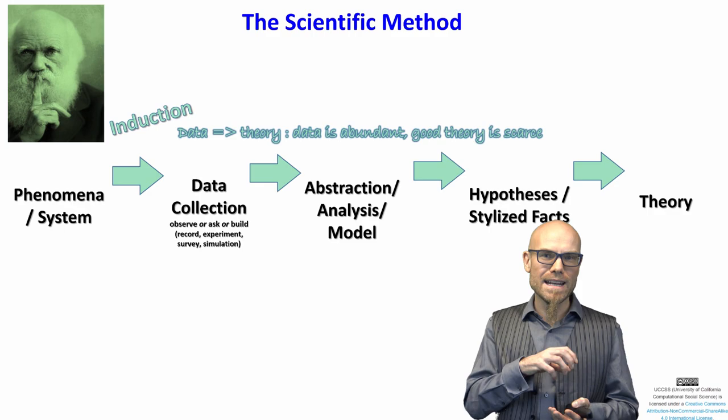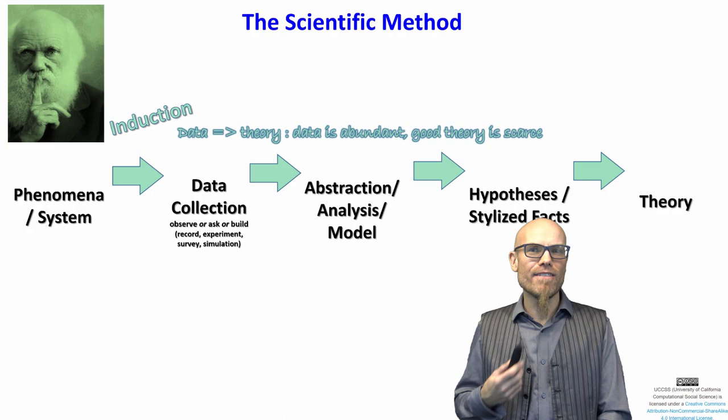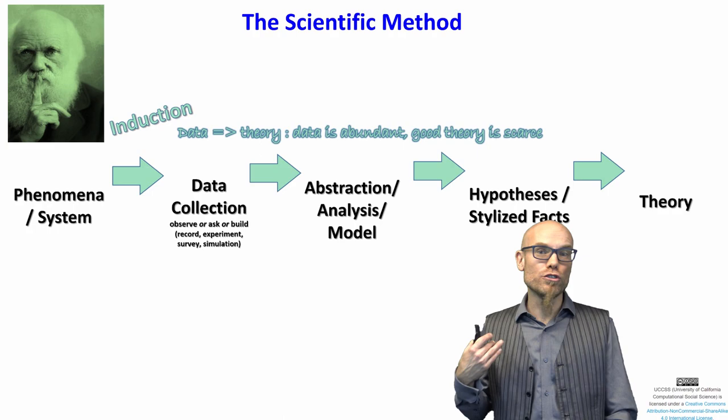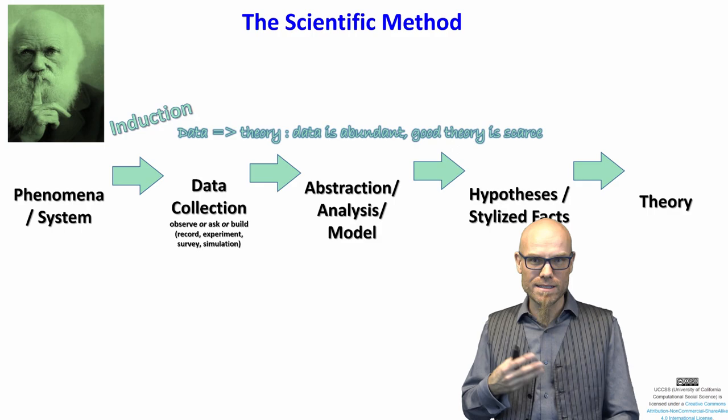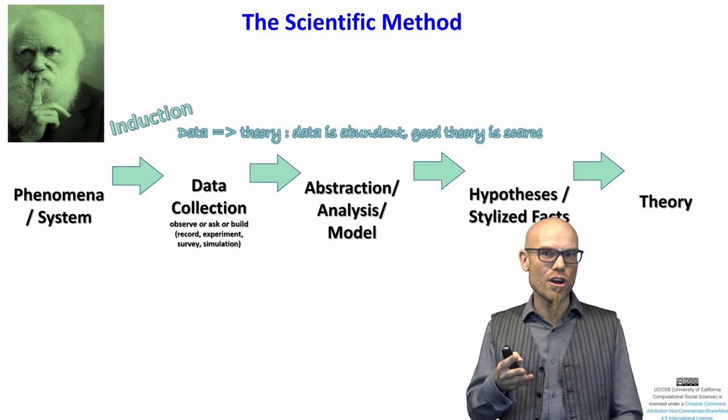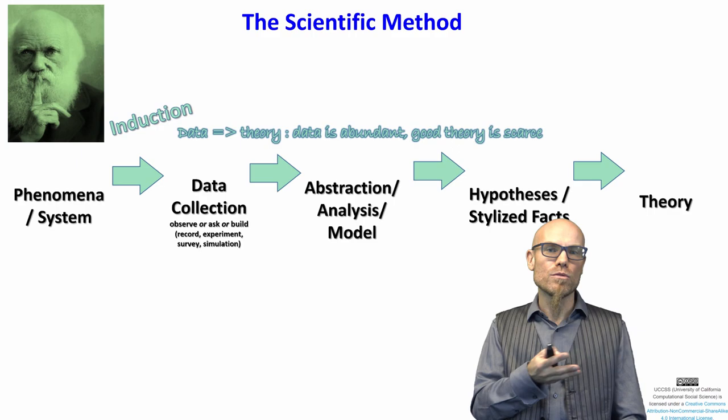You induce — you go from data to theory. In cases where data is abundantly available and good theory is hard to come by, you usually do induction, which you often do in computational social science because with the digital footprint we have big, big data. These big companies — Google, Facebook, Apple, Amazon — throw machine learning at it and come up with models that help them predict, for example, consumer behavior.